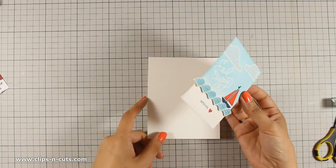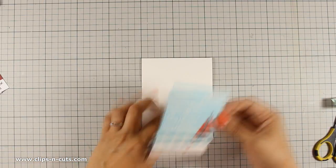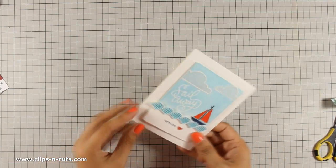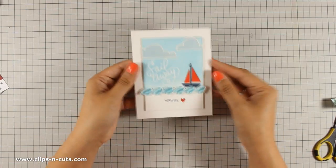I have used foam tape at the back of this panel and I am going to stick it at the center of a top folding card. That's a standard card which is four and a quarter by five and a half.